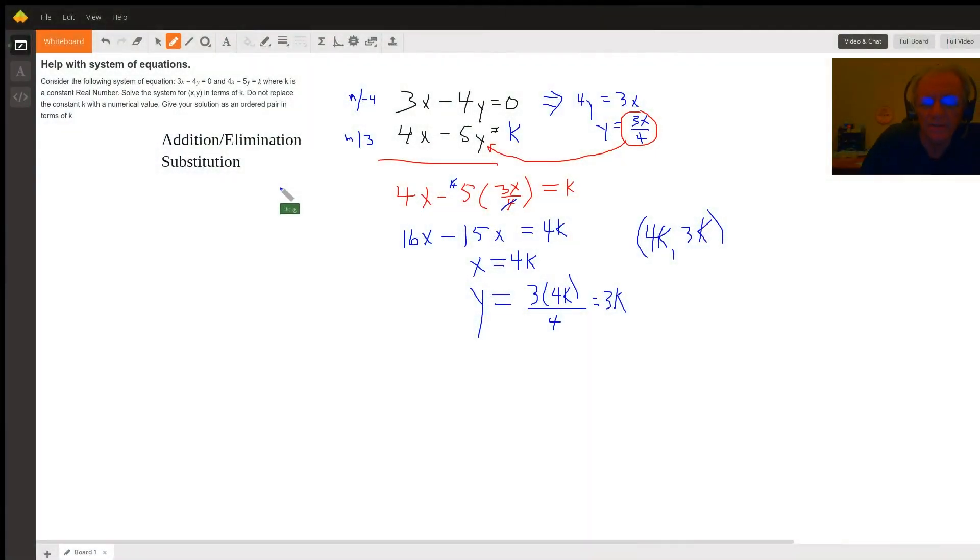I'll talk us through what I've written on the board already. What I said initially was that if this k had been a number like 7, you might understand what to do. You could use either the addition/elimination method or the substitution method.